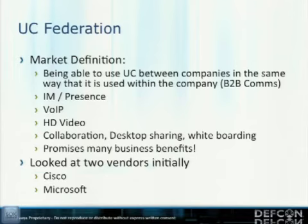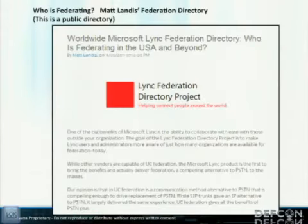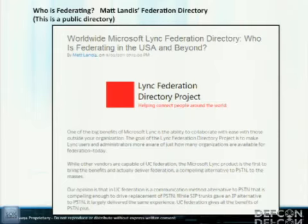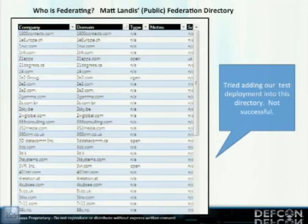It promises many business benefits. We looked at two vendors initially: Cisco and Microsoft. The Cisco solution uses the PSTN initially to do the federation connection and builds a hash of the two users, then they can use TCP/IP. We wanted to focus on Microsoft because we like the way Microsoft does UC Federation — and Microsoft is the surprise vendor we ended up doing research on. Their solution appears to be really taking off. Matt Landis published a public federation directory to create awareness around Microsoft UC users and let others know who's doing federation. With Carl, Bill, and myself, we set up our own Microsoft UC honeypot — our own installation of Microsoft Lync — and published ourselves into this directory, though Matt Landis wouldn't allow it.